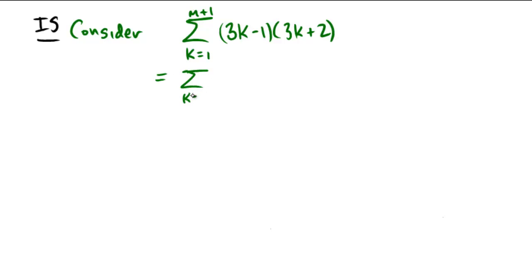First piece: k equals 1 to m of 3k minus 1 times 3k plus 2. So that's the first m of the terms, ignoring the m plus 1th term. Now let's throw that m plus 1th term in. What would that be? Well, that would be replacing k with m plus 1, so we'd have 3 times m plus 1 minus 1 multiplied by 3 times m plus 1 plus 2.